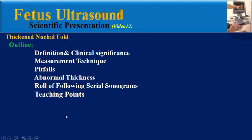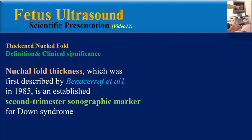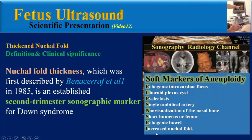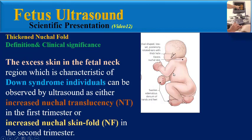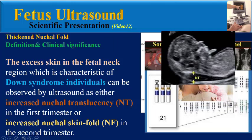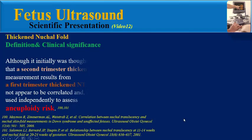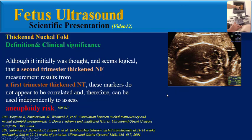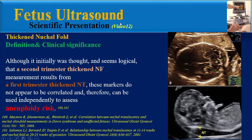The first topic is definition and clinical significance. Nuchal fold thickness, which was first described by Benicroff in 1985, is an established second trimester sonographic marker for Down syndrome. The excess skin in the fetal neck region, characteristic of Down individuals, can be observed by ultrasound as either increased nuchal translucency in the first trimester or increased nuchal skin fold in the second trimester. Although it initially seemed logical that a second trimester thickened nuchal fold results from a first trimester thickened nuchal translucency, these markers do not appear to be correlated and therefore can be used independently to assess aneuploidy risk.